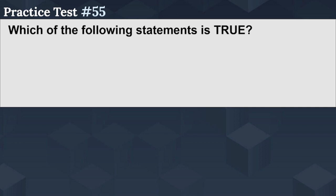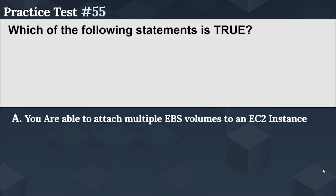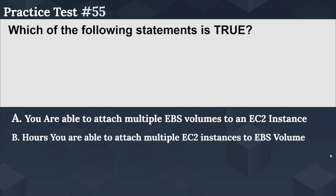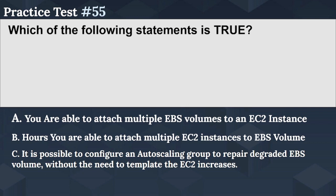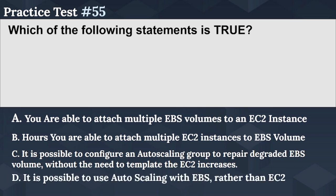The next question is: which of the following statements is true? Option A: you can attach multiple EBS volumes to an EC2 instance. Option B: you can attach multiple EC2 instances to an EBS volume. Option C: it is possible to configure an auto-scaling group to repair a degraded EBS volume without the need to template the EC2 instances. Option D: it is possible to use auto-scaling with EBS rather than EC2.